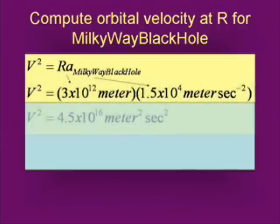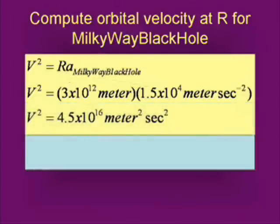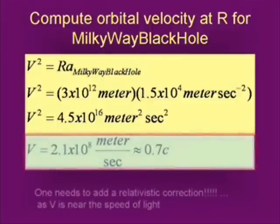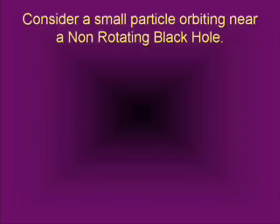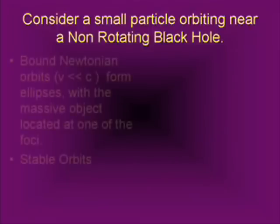We can plug in the numbers. v squared equals r times the acceleration. You get something that is about the speed of light. Realizing nothing can go faster than the speed of light, when we solve this and take the square root, we get, lo and behold, about 0.7c. This is the relativistic value, meaning we really need to apply relativity here. We're talking about relativistic speeds.